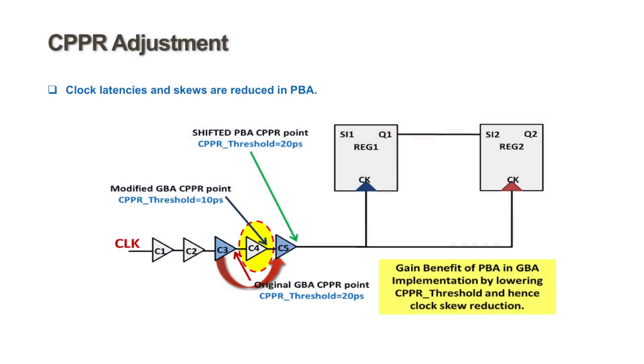Conventionally, we try to model the uncommon path skew in our designs through means of a variable called CPPR threshold. But in case of GBA, we know that latencies are always going to be higher than PBA. So in Tempus, what we see — specifically in modes like shift and scan-shift modes — is that the CPPR value adjustment that we see in case of PBA increases as compared to GBA. This means that I do not need to add so many hold buffers; I already get a hold margin through modeling of PBA and GBA. This allows us to save a significant number of hold buffers while still retaining the same sign-off quality through the means of Tempus PBA, and hence we reap the benefits of PBA in a GBA environment.